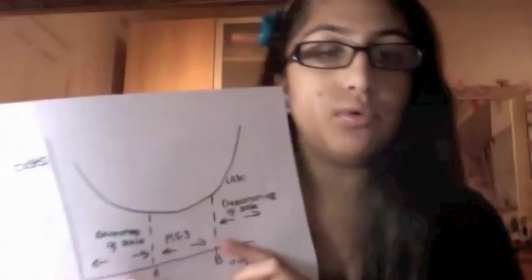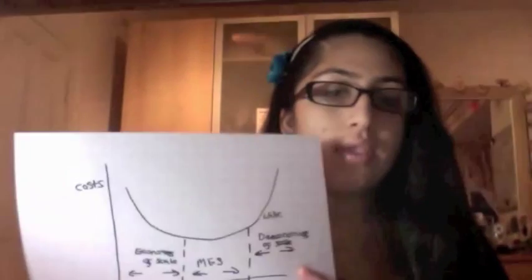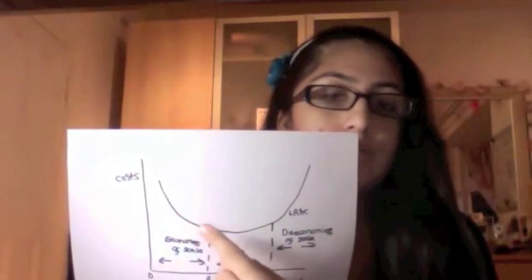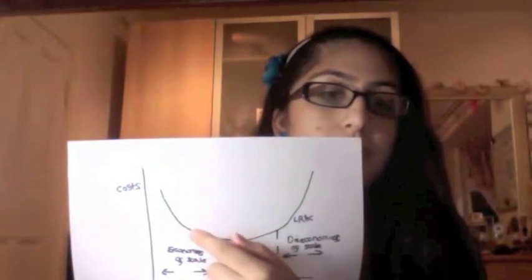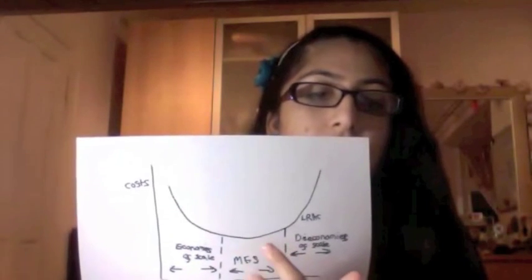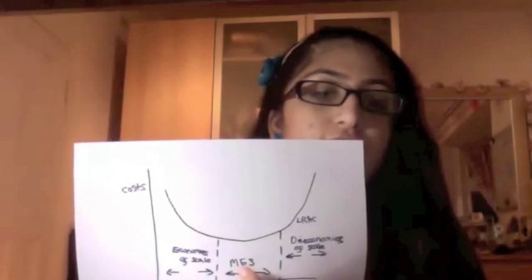The long run average cost curve is shaped like an envelope — more angular than a U-shape. When a firm starts up they have really high costs, and then as they increase output their average costs fall due to economies of scale. They then reach a sort of plateau where costs are minimised, between points A and B, and this is called the minimum efficient scale.